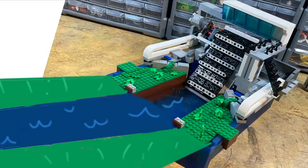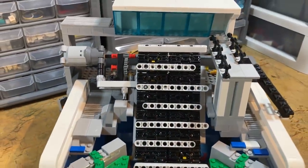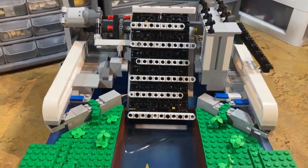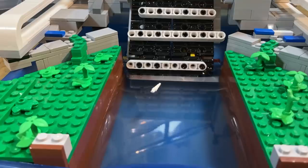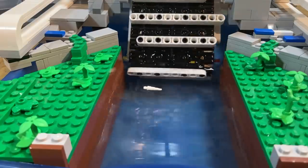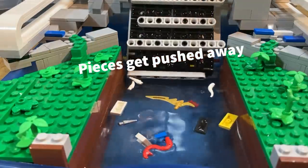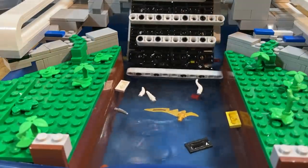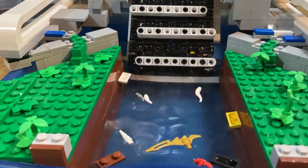If this was implemented into a real world environment, there would be one very important variable that I have no way of replicating with LEGO bricks and a plastic drawer. And that's a current. The key component that a machine like this would rely on would be the flow of the water to push all the garbage into the conveyor belt. And because the water in my replica does not move unless pushed by the tread, the only flow is away from it.